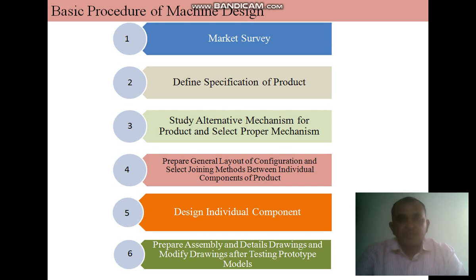The second step is to define the specifications of the products. When you identify a product need or a gap in the market, you define proper specifications. For example, if you design an electric motor, you decide its capacity, HP, and speed. Or for an agricultural pump, you define the head height and flow rate. These are the different specifications you decide for the products.